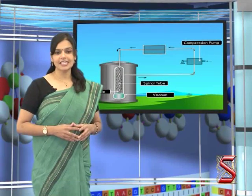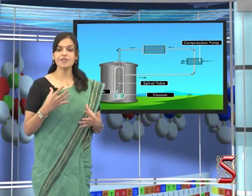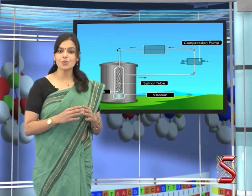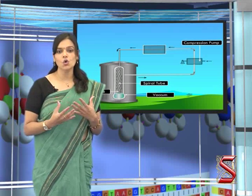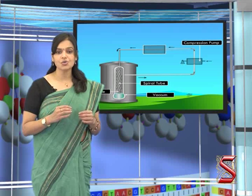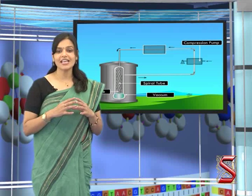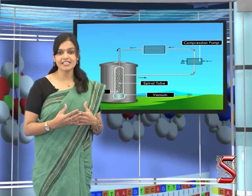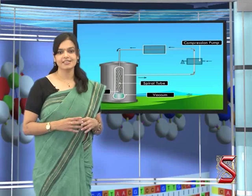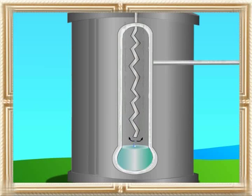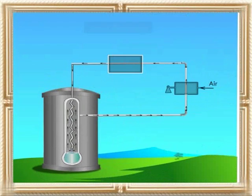In the fractional distillation of liquid air, fresh air free from carbon dioxide is compressed to about 200 atmospheres, which is then cooled by passing through a pipe surrounded by cold water. After that, the cooled and compressed air is passed through a spiral tube where it escapes from the nozzle, causing the cooling of the air and converting it into a liquid state. The cooling of the compressed gas into a liquid form by sudden expansion is known as the Joule-Thompson effect.